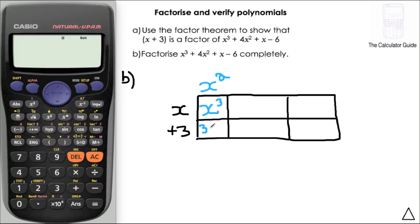In the bottom cell I multiply x squared by 3, giving 3x squared. Comparing that to the 4x squared in my polynomial, I need another x squared, so I write that in the next column on top. What do I need to multiply x by to give me x squared? That's x — so I'm putting plus x here on the top.